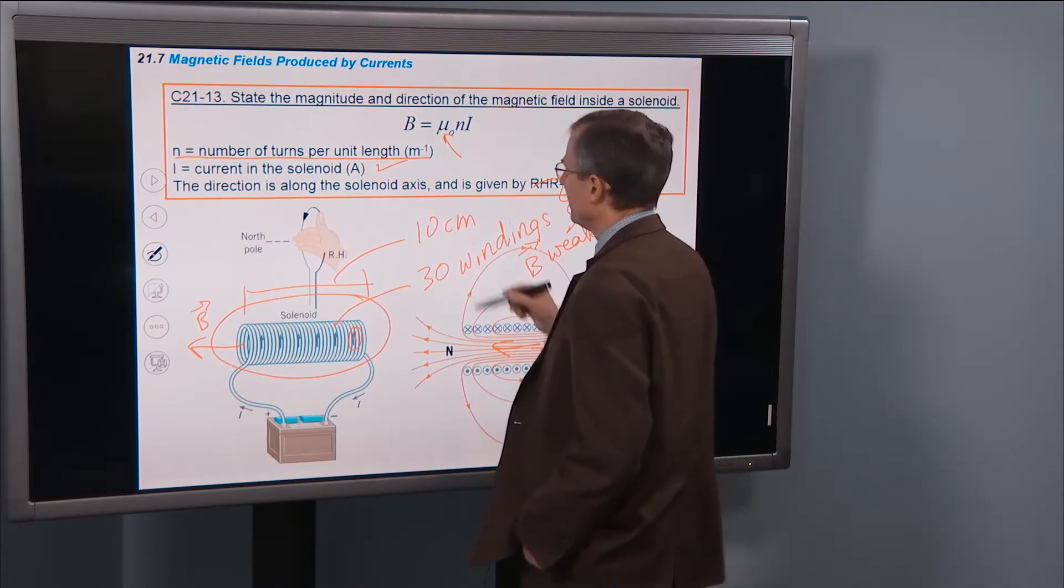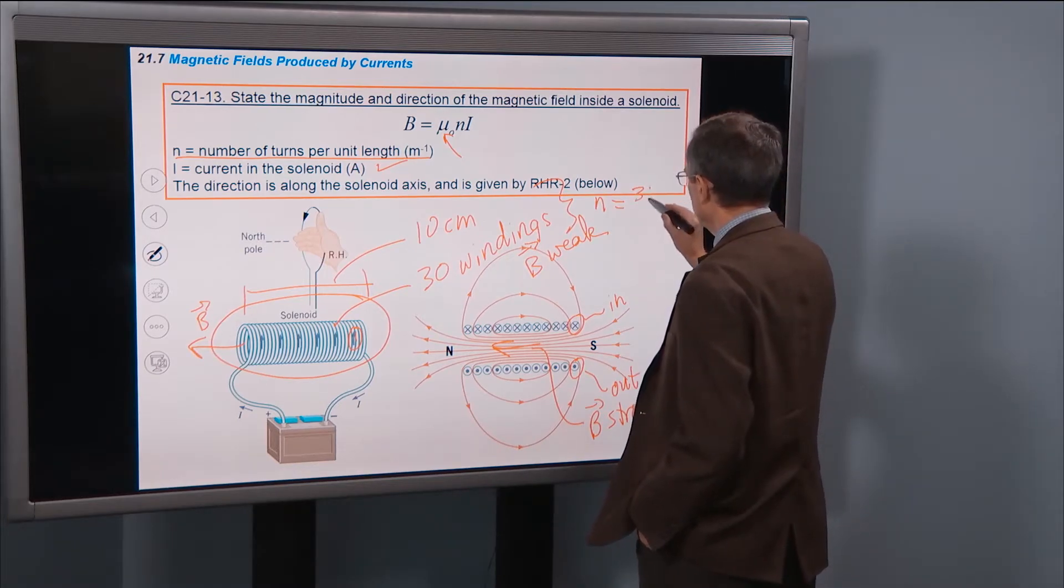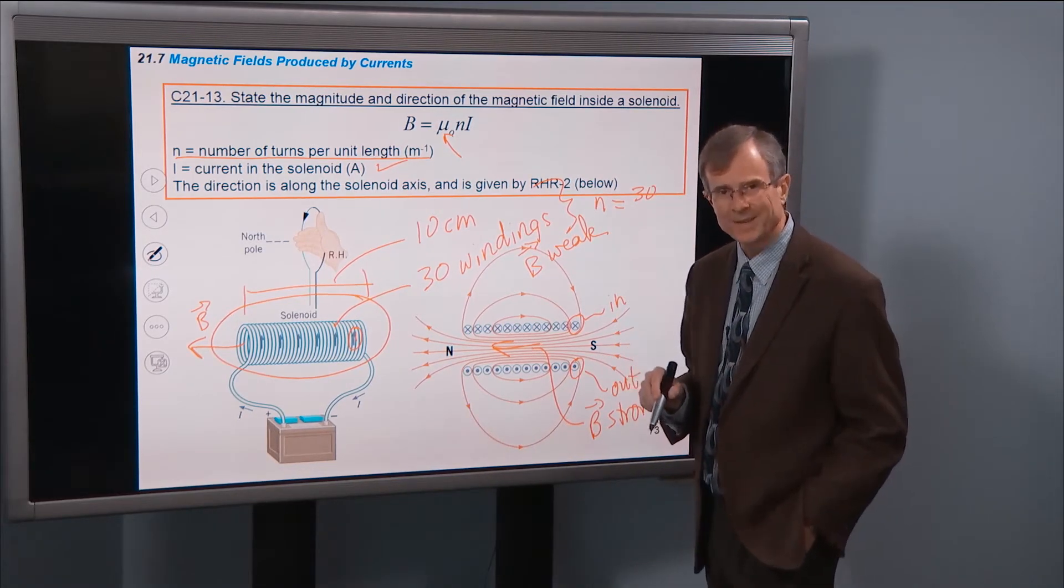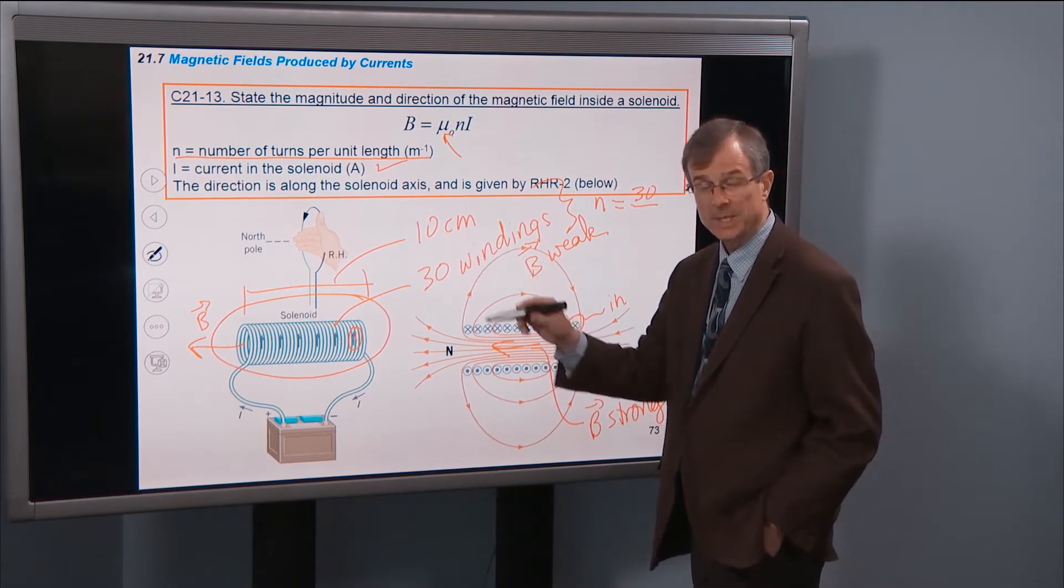the number of turns per unit length, would be 30 turns or 30 windings per unit length. Well the length is 10 cm.